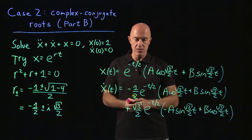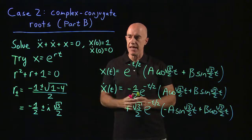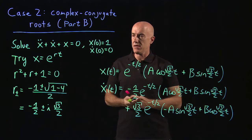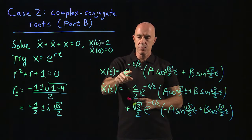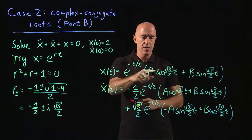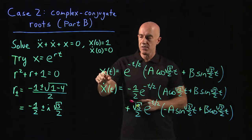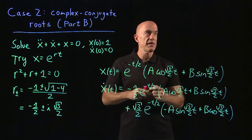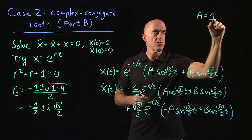When we plug in x of zero and x dot of zero, things will simplify. x of zero equals one: putting in t equals zero, e to the zero is one, cosine of zero is one, and sine of zero is zero. So x of zero is just equal to a, and that's supposed to equal one, so we get a equals one.